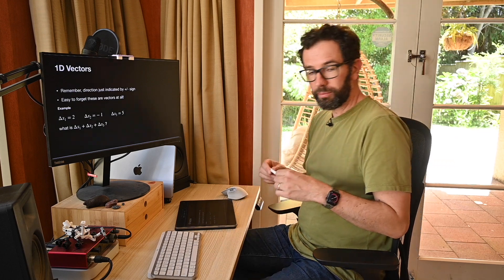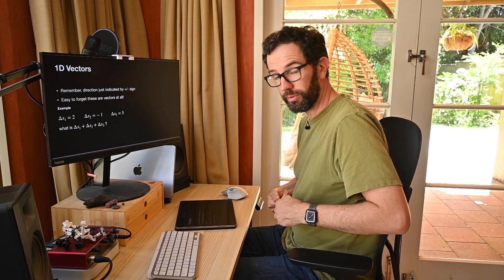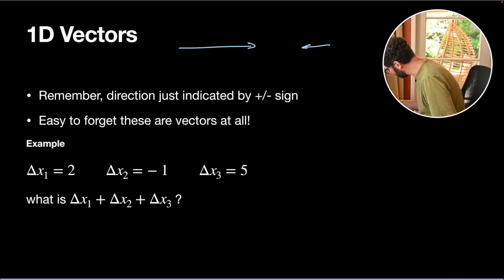It's worth briefly noting vectors in one dimension. In one dimension, all our vectors are arrows pointing either left or right. Instead of a complicated system, we just indicate direction with a plus or a minus — all the ones going right are positive, all the ones going left are negative. It's very easy to forget these are vectors at all. For example, if delta x1 is 2, delta x2 is negative 1, delta x3 is 5, what is the overall displacement?